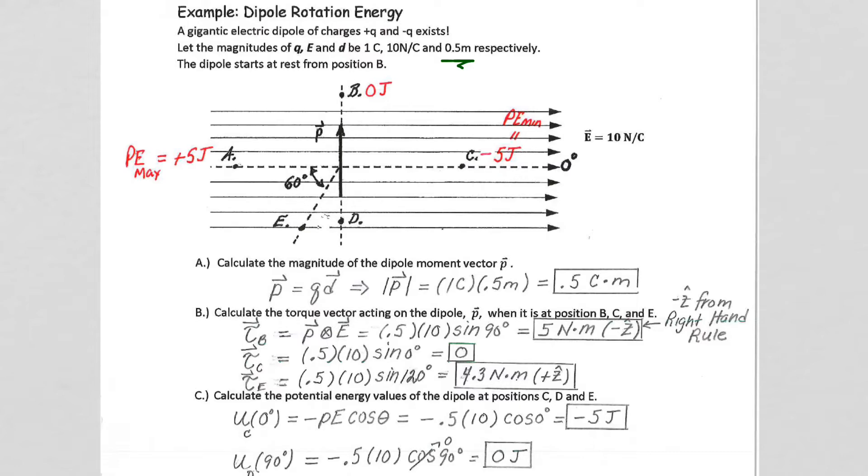And our dipole vector P we are given is initially pointing straight up here at position B, and we know that's our 0 joule potential energy value, but we'll get back to that in a moment.